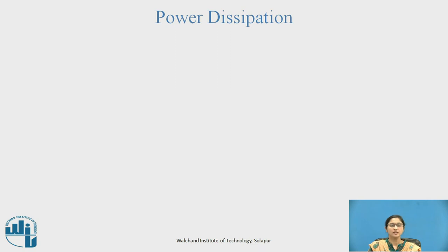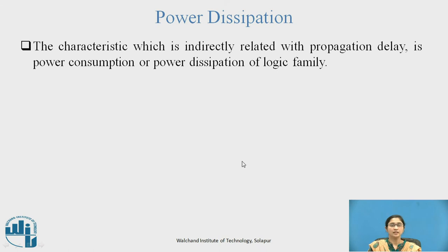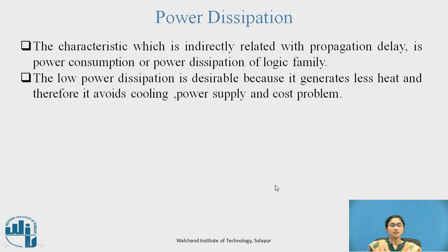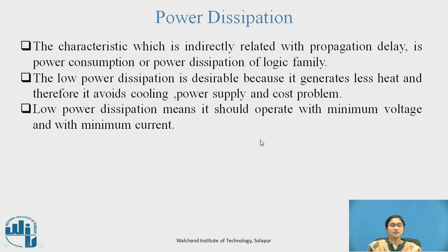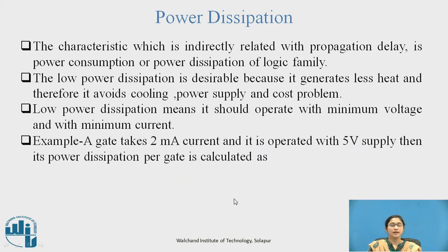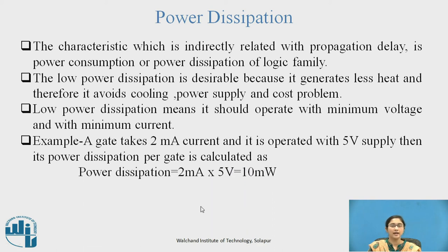Power dissipation is the second characteristic. It is indirectly related to propagation delay. Low power dissipation is desirable because it generates less heat and therefore avoids cooling, power supply, and cost problems. Low power dissipation means the device should operate with minimum voltage and minimum current. For example, a gate that takes 2 mA current and is operated with a 5 V supply has a power dissipation per gate of 2 mA × 5 V = 10 mW.